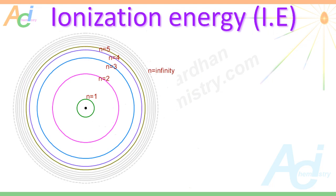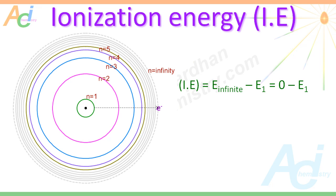One interesting fact about ionization energy: it is the energy required to remove an electron from an atom or ion in the ground state. In the ground state, the electron resides in the lowest possible orbit, that is the first orbit. After ionization, there is no attraction between the electron and nucleus — the electron is said to be in the infinite orbit with energy equal to zero. Therefore, the ionization energy is the energy difference between the infinite orbit and the first orbit, meaning ionization energy equals the negative of the energy associated with the first orbit.